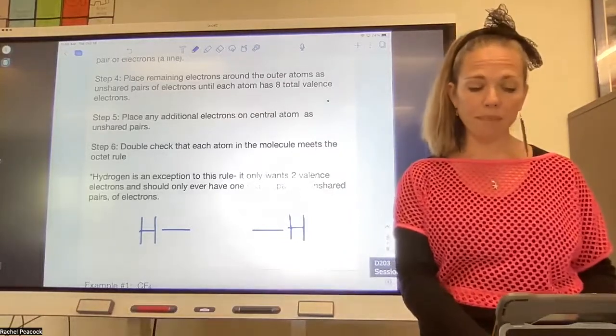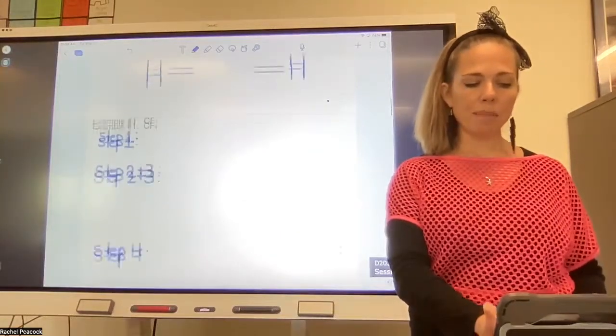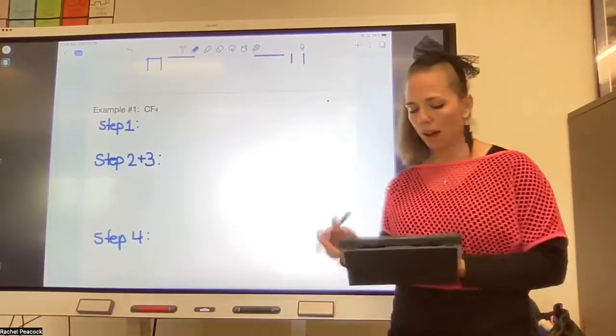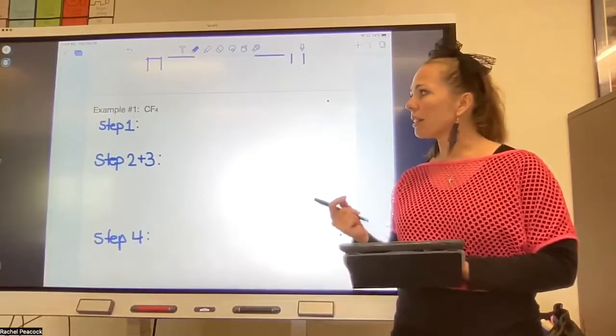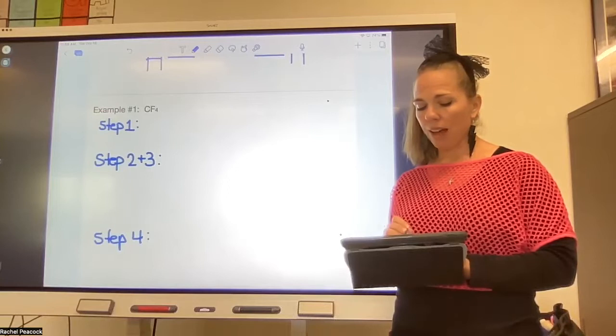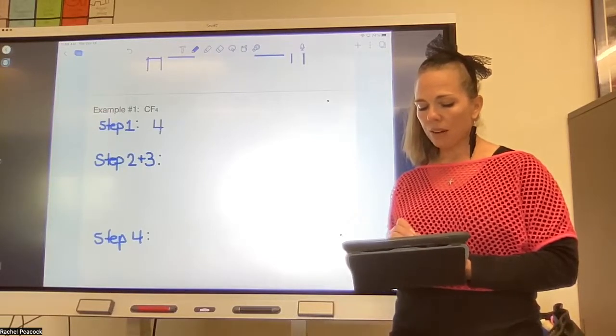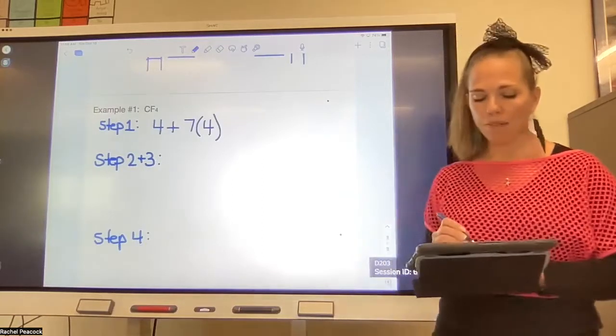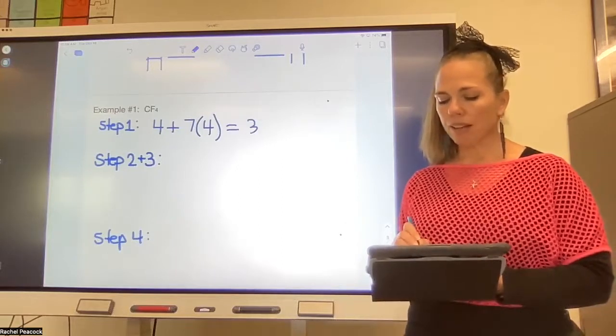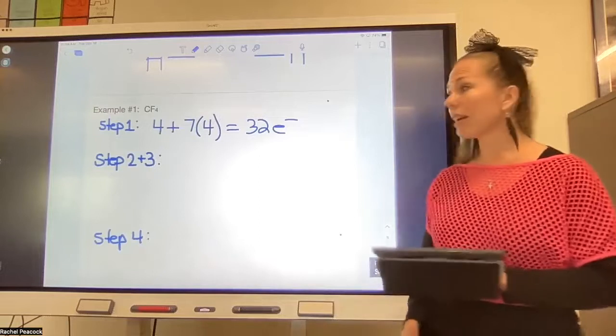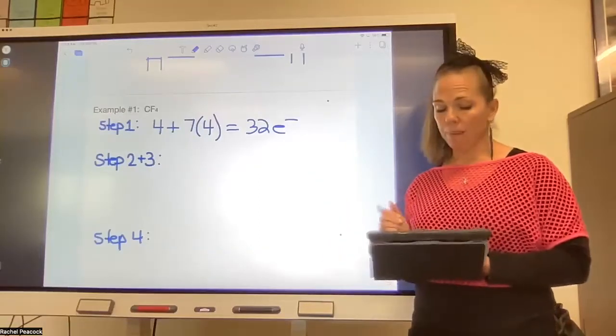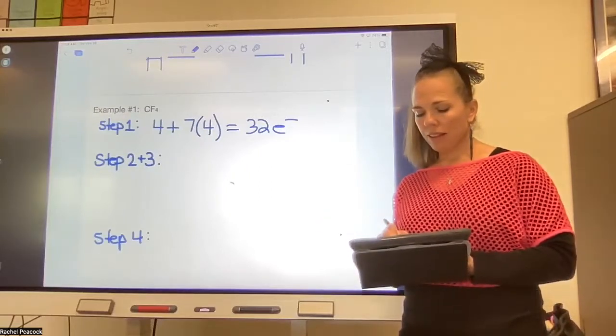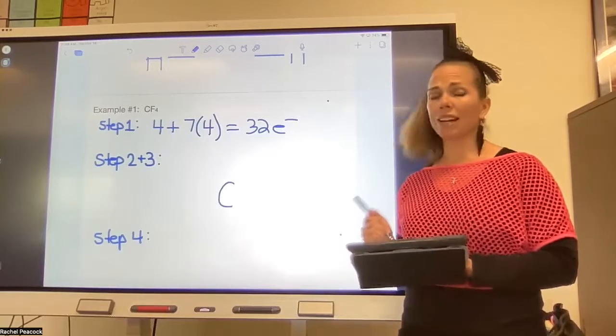All right, so let's go through a couple of examples real quick. Example one: CF4. I'll do this one for you if you need a refresher. So the first step is to count valence electrons. Carbon has four valence electrons, each fluorine has seven and there are four fluorines, so you need to multiply that by four. That's a total of 32 valence electrons. Don't skip that first step. Usually when people get these wrong, it's because they made a mistake in that first step. Steps two and three I like to combine. You need to figure out who goes in the center. In this case it's carbon. Carbon is definitely less electronegative than fluorine.